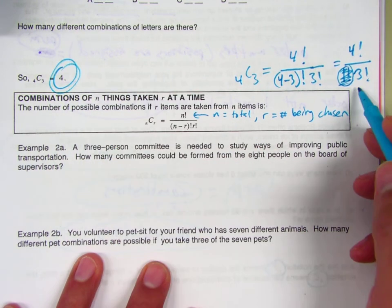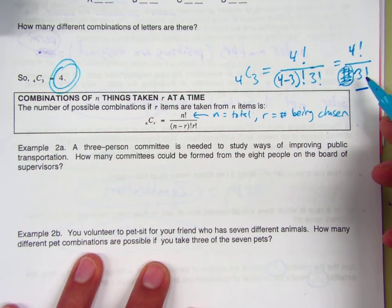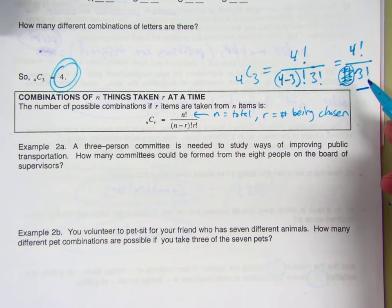This denominator, this dividing by 3 factorial, represents dividing out all those groupings that were the same that we don't want to count extra times.